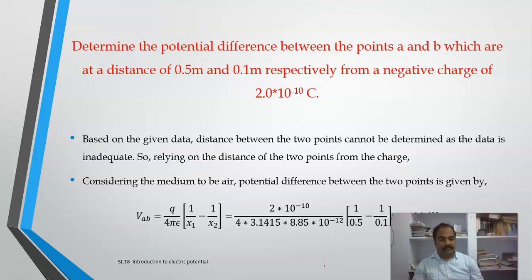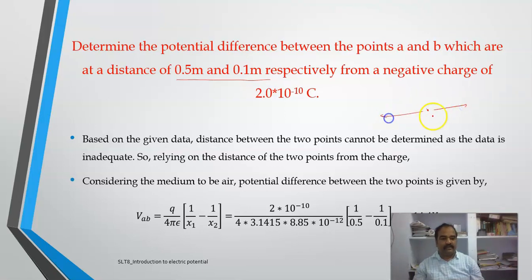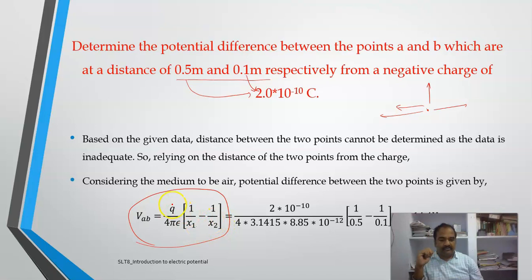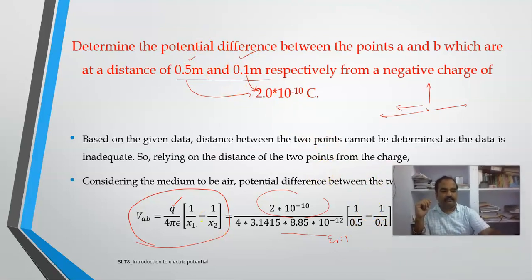Problem 2: Determine the potential difference between points A and B, which are at distances of 0.1 m and 0.2 m from a charge. Since the direction is not specified, we use the formula V₂₁ = q/(4πε₀) × (1/x1 − 1/x2). With q = 2×10⁻⁸ C, εᵣ = 1, x1 = 0.05 m and x2 = 0.1 m, the result is minus 14.4 volts.